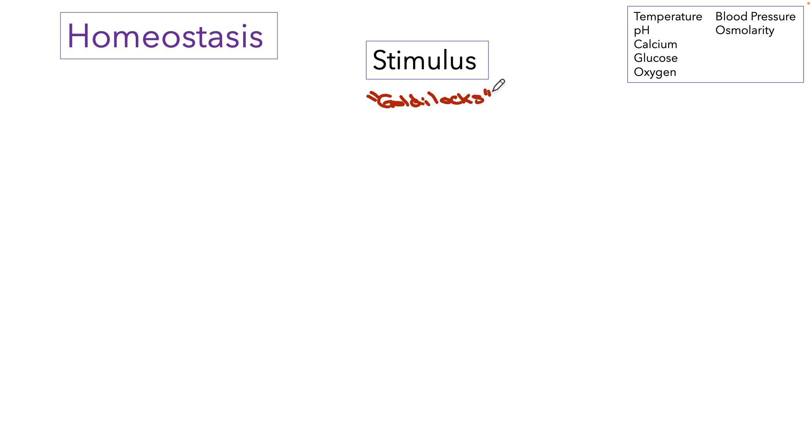Once we have an abnormal set point, the control center receives this information and it makes a decision on what to do. We can nickname the control center the boss because it makes these decisions and it tells everybody else what to do and everybody else has to do what it says. You might think that the control center is always the brain, but sometimes it's other parts of the body. And we'll learn about that later in the course.